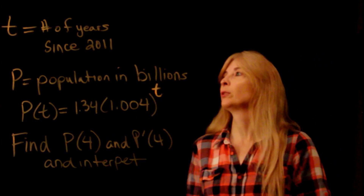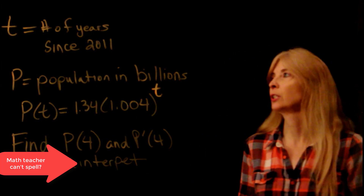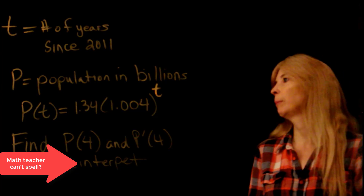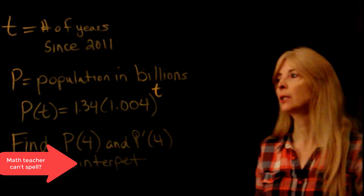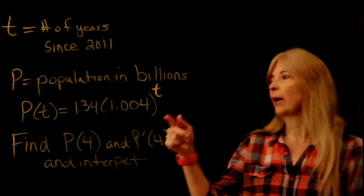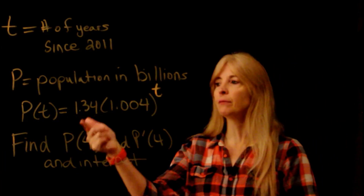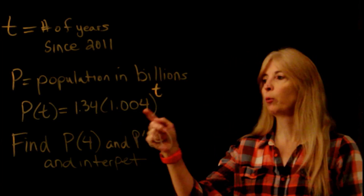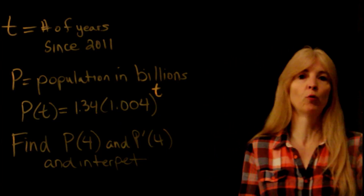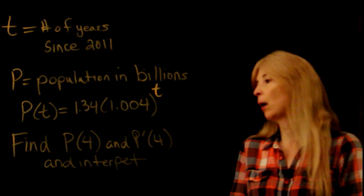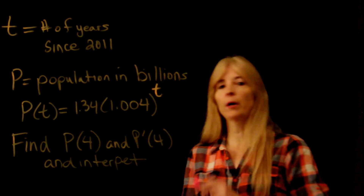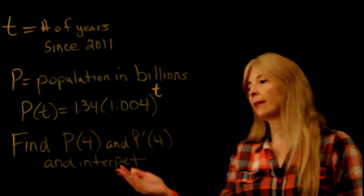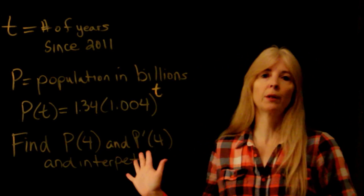We're given that t equals the number of years since 2011, and p is population in billions. If we have the function p of t equals 1.34 times 1.004 to the t power, find p of 4 and p prime of 4, and then what do they mean?